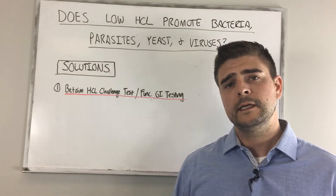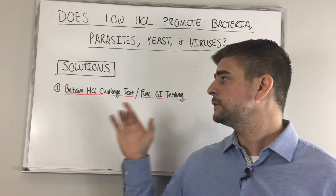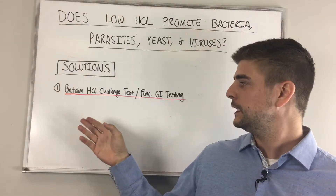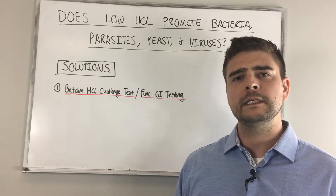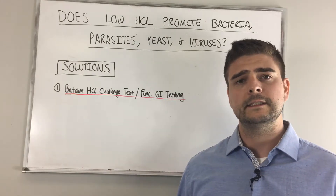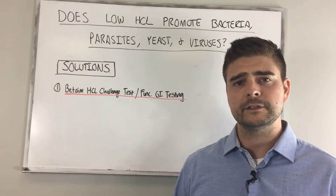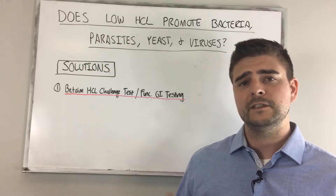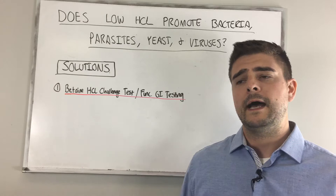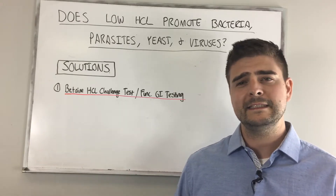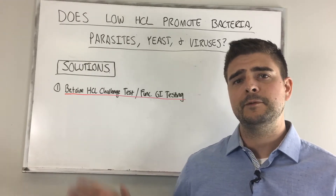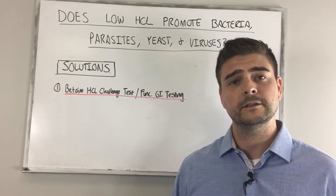Let's talk about some of the solutions. The first step is to test and not guess. I would suggest a betaine HCL challenge test — that's a decent option if you're looking to save some money, though the accuracy is so-so. I would prefer someone get a functional GI test that gives us a decent idea of the levels of HCL or stomach acid in your stomach. I like to use the 401H from BioHealth. I can tell you that typically 90 to 99% of people I'm treating with functional medicine have some level of low stomach acid.